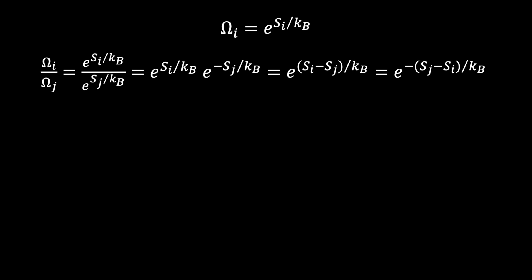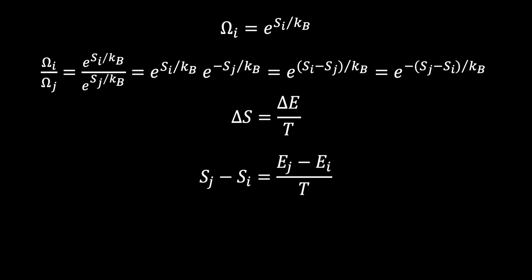In our previous video on deriving the classical expression for entropy and the definition of temperature, we showed that a change in entropy equals a change in energy divided by the temperature. Thus, the difference in entropy between system j and system i equals the difference in energy between system j and system i divided by the temperature. Returning to our derived equation, the ratio of microstates of system i to system j equals e raised to the negative difference in energy between system j and system i, divided by the Boltzmann constant times temperature.